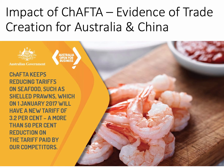The average tariff on Australian seafood going into China is now just 3.2%, and that's more than half the tariff on exports going into China from competitor countries. So some evidence here of trade creation happening as a result of a tariff coming down.